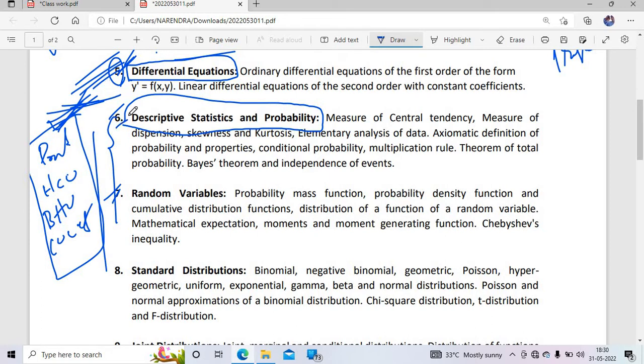Looking at the syllabus, descriptive statistics includes measures of central tendency, measures of dispersion, skewness, kurtosis, and probability related topics. It's not like IIT JAM syllabus - this is very basic syllabus. Random variables are covered including PMF, PDF, CDF, distribution of functions of random variables, expectations, moments, and moment generating functions.